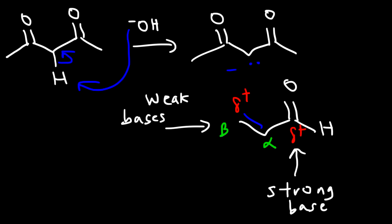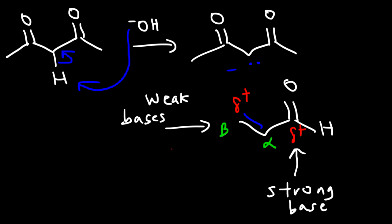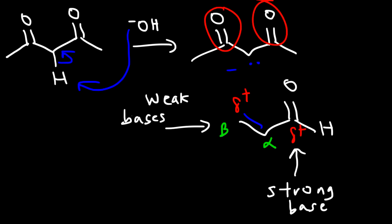A weak base gives conjugate addition. In order to get the Michael reaction, we want the stabilized enolate, or weak base, to attack at the beta carbon. That's why it's beneficial that the enolate is flanked by two carbonyl groups, because a weak base prefers to attack there.